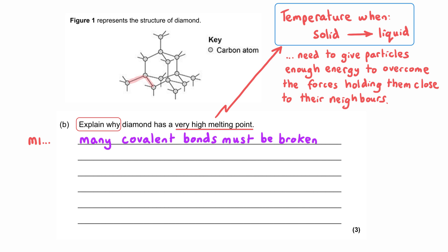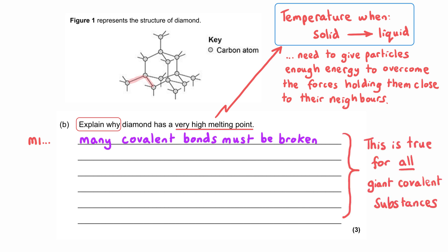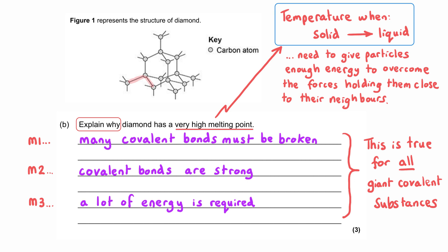The only way to get those atoms to separate and move more freely is to break the covalent bonds. In giant covalent substances, we need to break many covalent bonds to change state. Furthermore, covalent bonds are very strong, so breaking them requires a lot of energy. We only have enough energy to make this happen at very high temperatures — that's why diamond has a very high melting point.